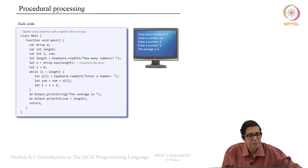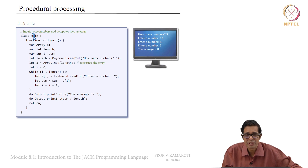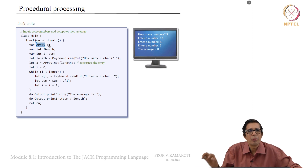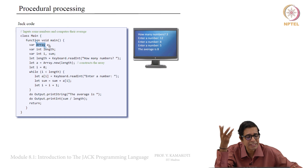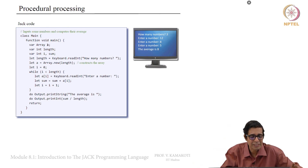Now let us look at the next program. Again there is a class Main and a function void main, introducing more syntax. We declare: var Array a, var int length, var int i comma sum. In Jack, arrays are not typed — you can store anything in them — but every element is a 16-bit variable, so you can store integers or strings. Then let length equal to Keyboard dot readInt with the prompt 'how many numbers'.